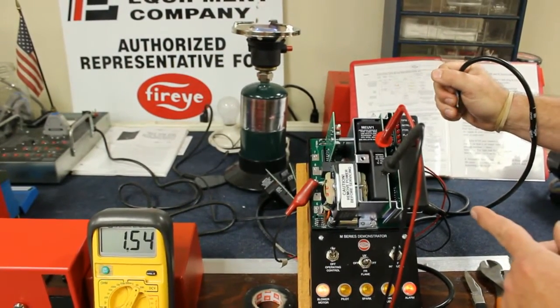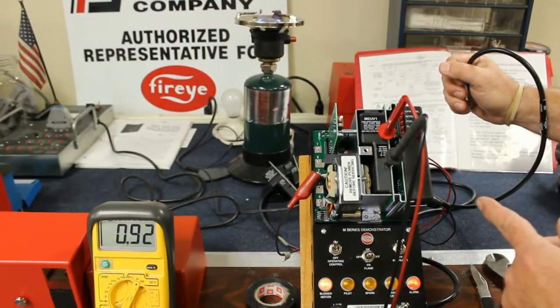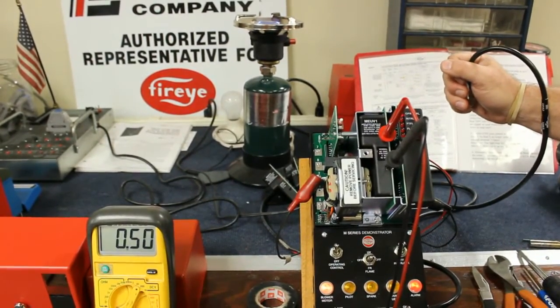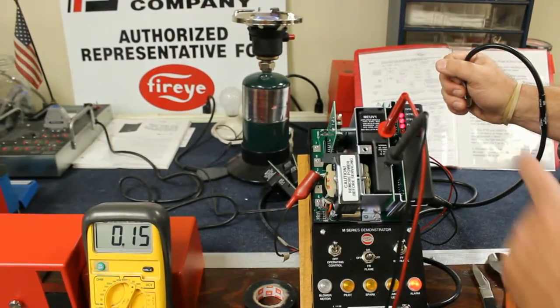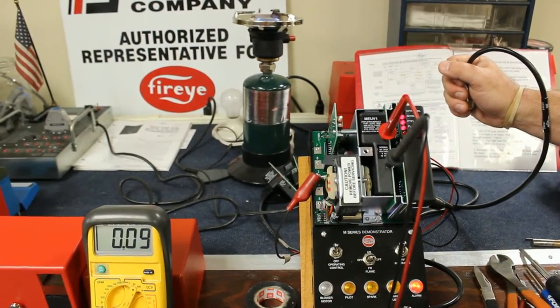Now if it were to see signal now without being in pilot trial for ignition, it would still head to lockout thinking it's seeing a false flame. And there we have it, it flashes a code telling us what went wrong.